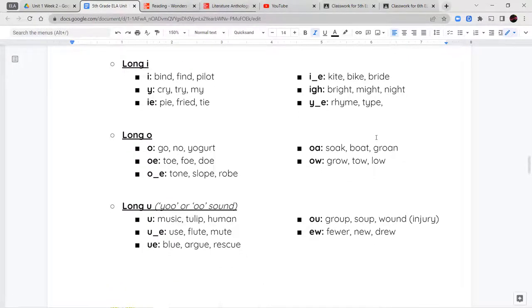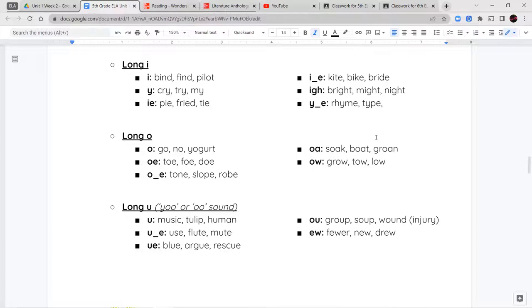Next we have long O. Long O says go, no, or yogurt with just an O by itself. O-E like toe, foe, or doe. O consonant letter E like tone, slope, or robe. O-A like soak, boat, or groan. And O-W like grow, toe, or low.